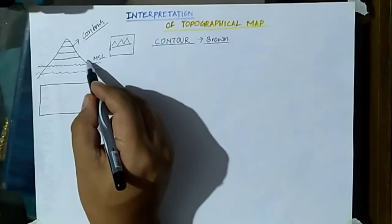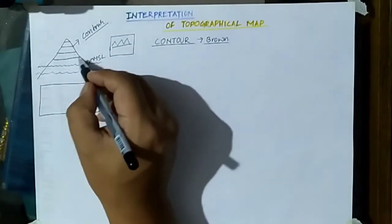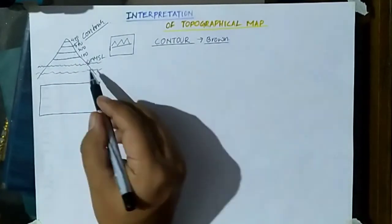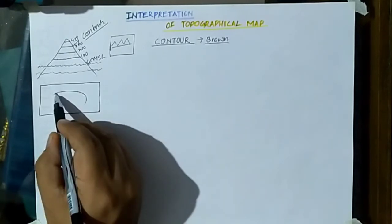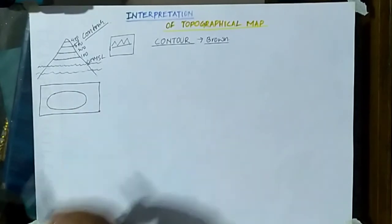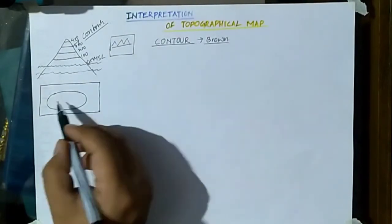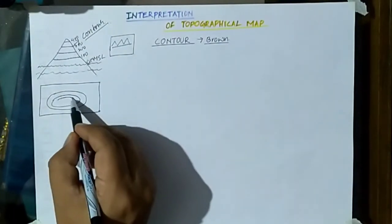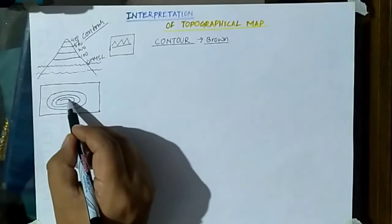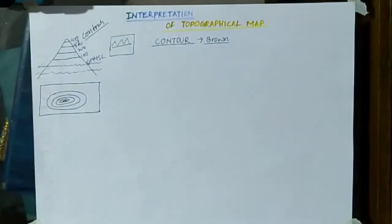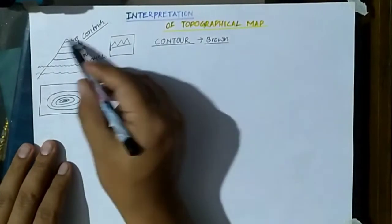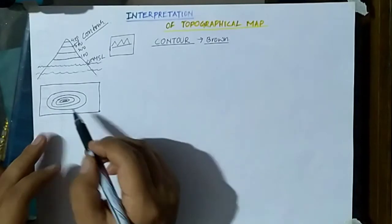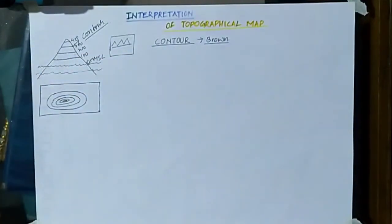In this top view, this outermost line represents zero meters. Then 100, 200, 300, and 400 meters going inward. In the top view, the zero-meter contour is the outermost, then 100 meter below it, then 200, 300, and 400 meter toward the center. This is the top view of the mountain.